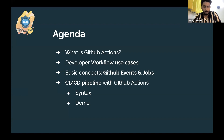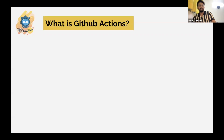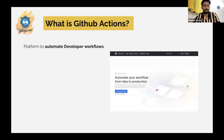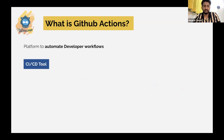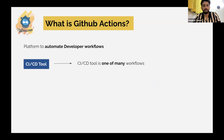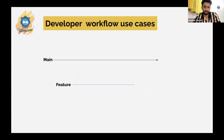So what is GitHub Actions? It's basically a platform to automate developer workflows. I've seen a lot of tutorials and videos that say GitHub Actions is a CI/CD tool, but that's not entirely true. CI/CD is just a part of GitHub Actions — one of the many workflows that GitHub Actions supports.